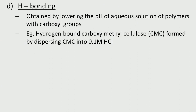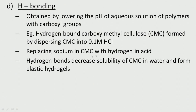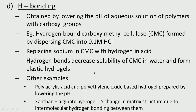Ionic hydrogen bonding can be formed by lowering the pH of aqueous solutions of polymers with carboxyl groups. For example, carboxymethyl cellulose (CMC) hydrogel is formed by dispersing CMC in HCl — replacing sodium in CMC with hydrogen so it can form hydrogen bonds. This decreases solubility of CMC in water, forming elastic hydrogels. Other examples include polyacrylic acid and polyethylene oxide hydrogels prepared by lowering the pH, and xanthan-alginate hydrogels where intermolecular hydrogen bonding plays a very important role.